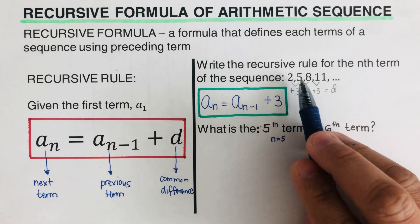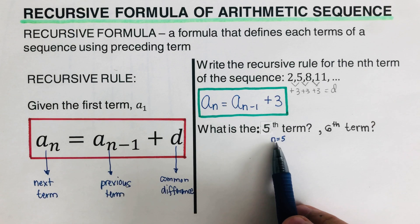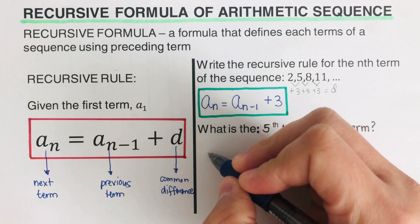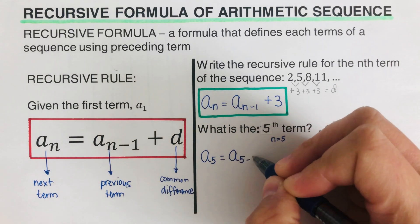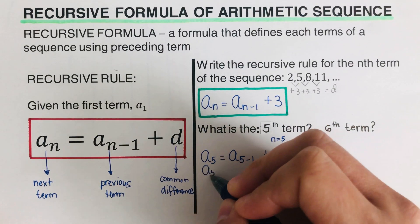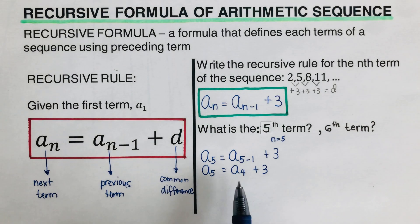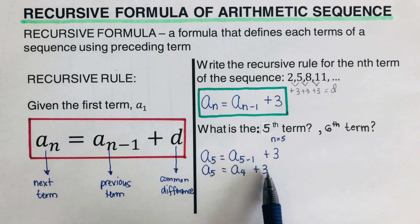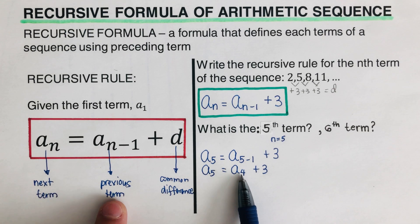The terms correspond to n equals 1, n equals 2, n equals 3, n equals 4. We plug 5 into the equation: a sub 5 is equal to a sub 5 minus 1 plus 3, which simplifies to a sub 5 is equal to a sub 4 plus 3. What this tells us is that once we know the fourth term, we add 3 to get the fifth term.